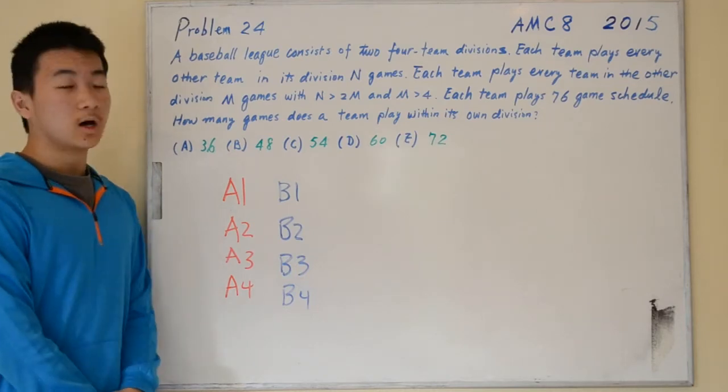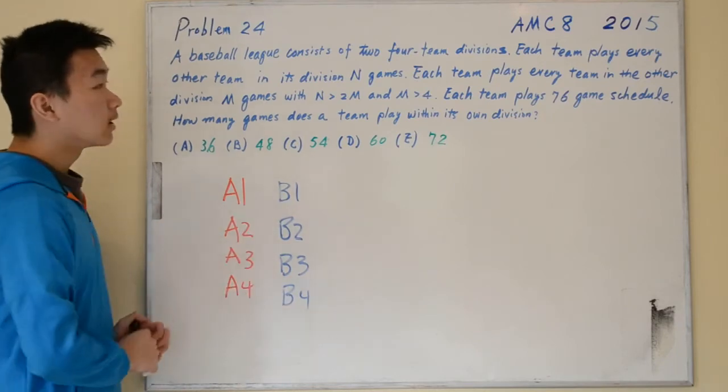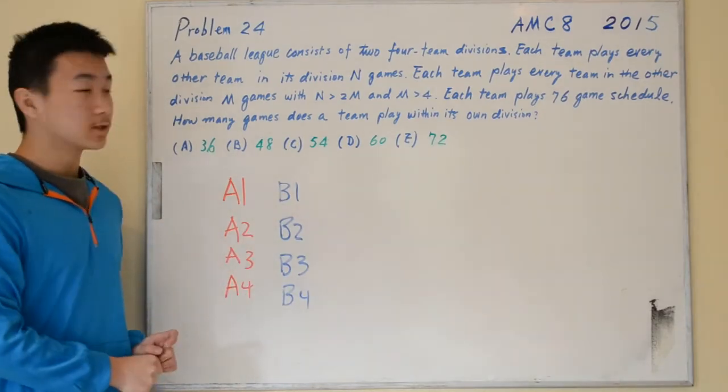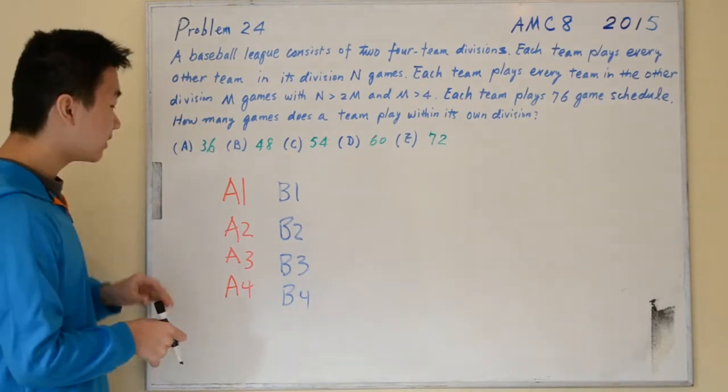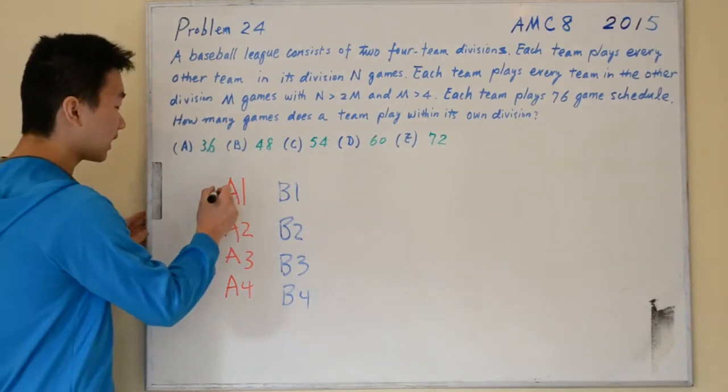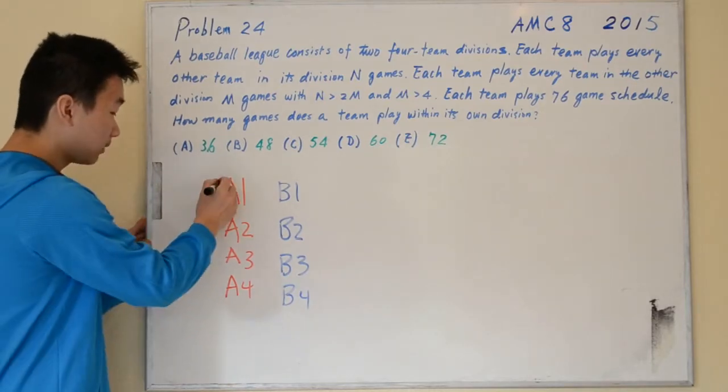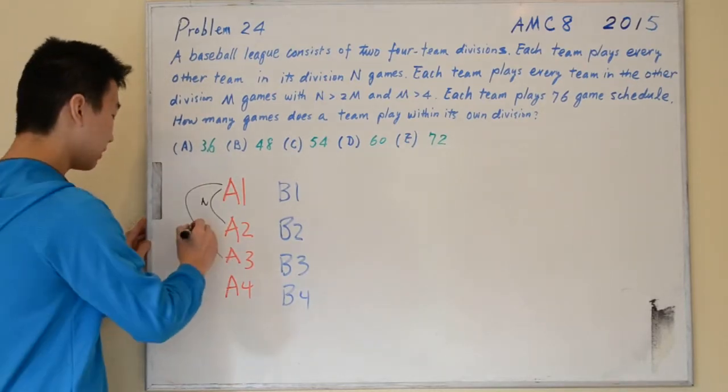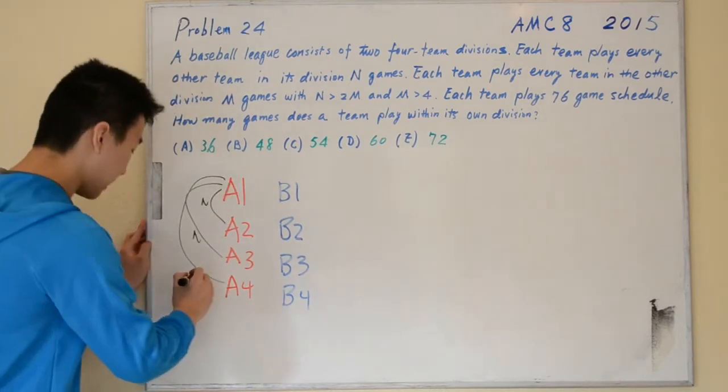So the problem reads: a baseball league consists of two four-team divisions. Each team plays every other team in its own division n times. So that means team A1 will play against A2 n games, against A3 n games, and against A4 n games.